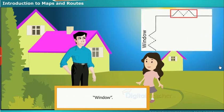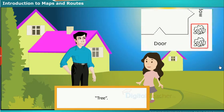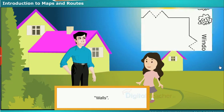What do these symbols represent then? Window, Door, Tree, Walls.